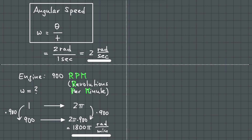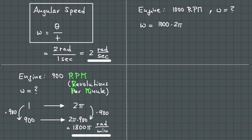We see that angular speed is the way the turning rate of an engine is described. Let's look at another example. Let's say an engine is idling at 1000 rpm. What is the angular speed of this engine? Again, what we have to do is multiply 1000 by 2 pi, which is 2000 pi. So, the angular speed of an engine which idles at 1000 rpm is 2000 pi radians per minute.